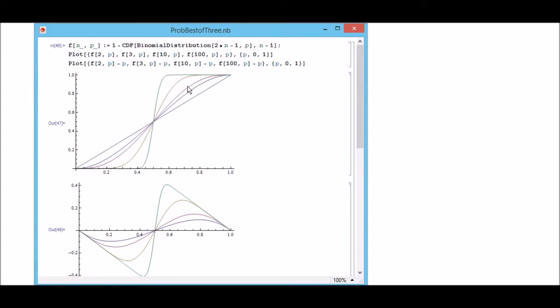As you can see, the steepness of the curve is really increasing near 0.5, the higher the number of n is—the number of sets to win.